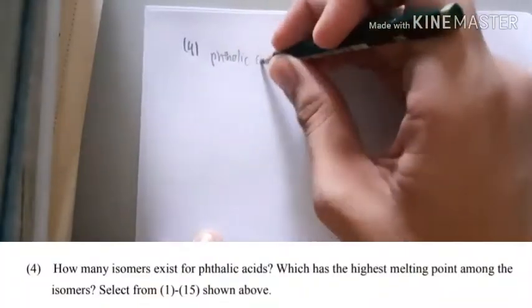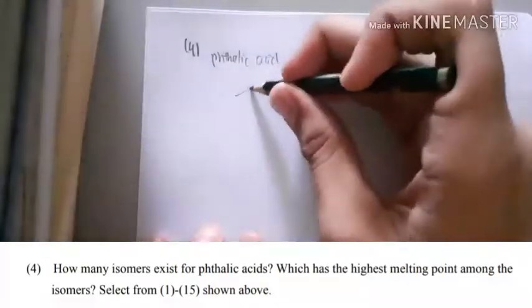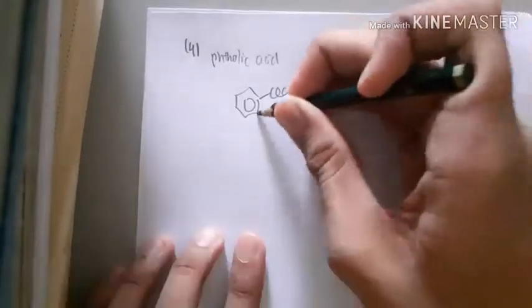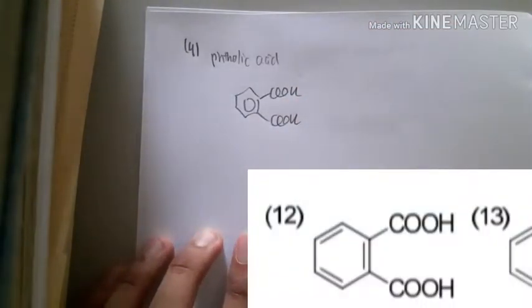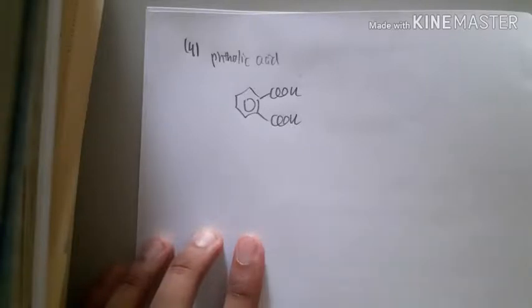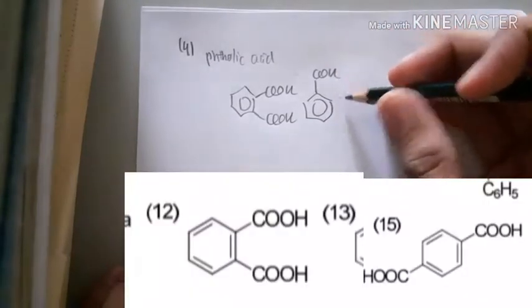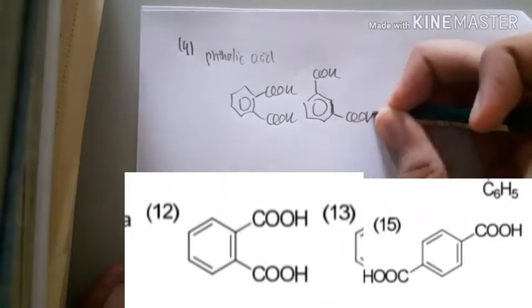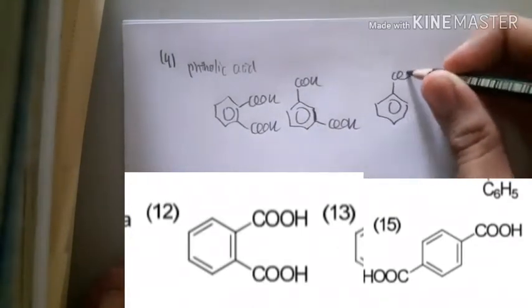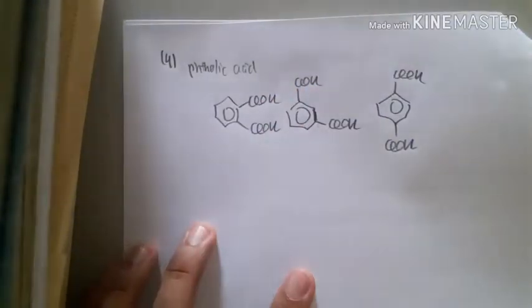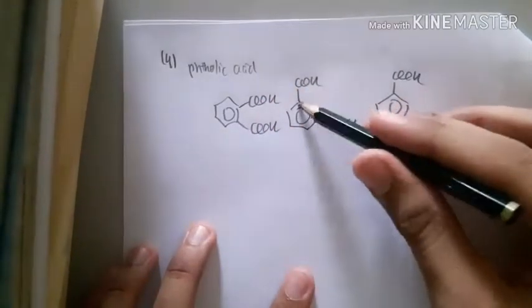Number four: how many isomers exist for phthalic acid? Phthalic acid is the compound we found for the C answer in part five number one. The isomers are only three — there is this one, then one more, and one more. The three isomers of phthalic acid are in the ortho position, meta position, and para position.